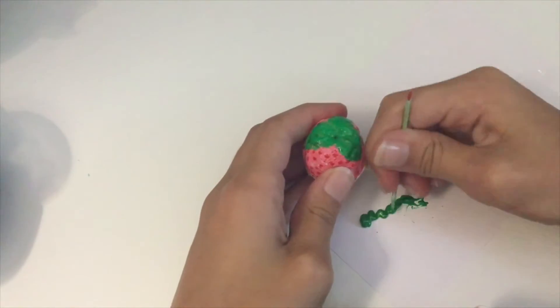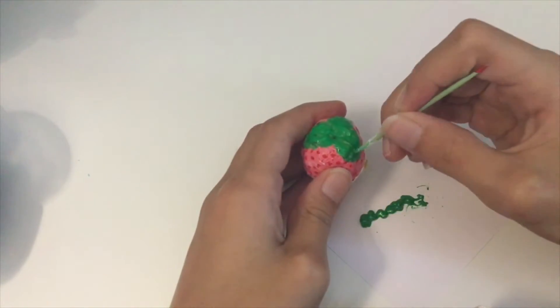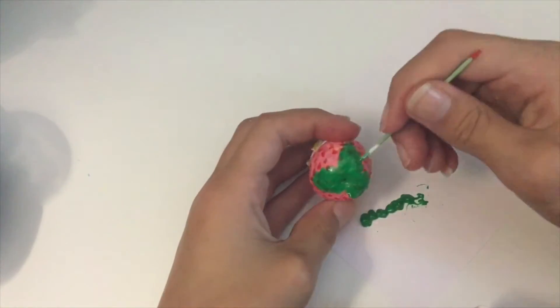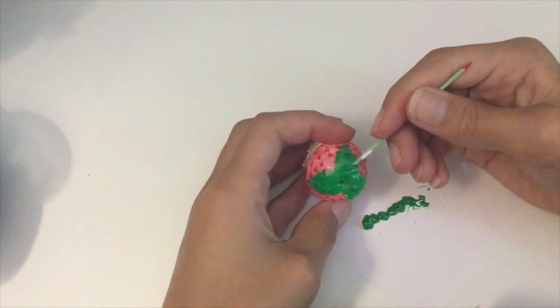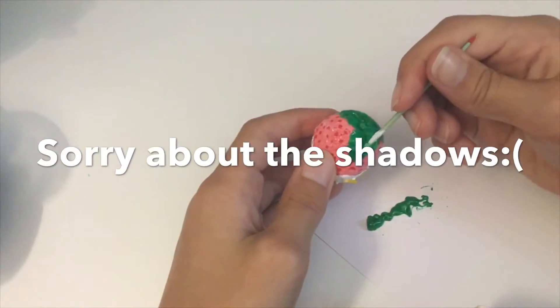So now I'm going in with some darker green puffy paint and doing some little details on the leaves of the strawberry. This is really simple so you guys can just watch and do any design on the leaves you want to do.